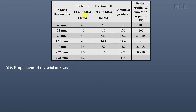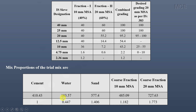The final trial mix proportions per m³ are: cement 410.43 kg, water 183.57 L, sand 577.4 kg, 10 mm coarse aggregate 485.09 kg, 20 mm coarse aggregate 727.63 kg. Dividing by cement quantity gives the mix ratio: 1 : 0.447 : 1.406 : 1.182 : 1.773. This is the complete IS code concrete mix design for M25.